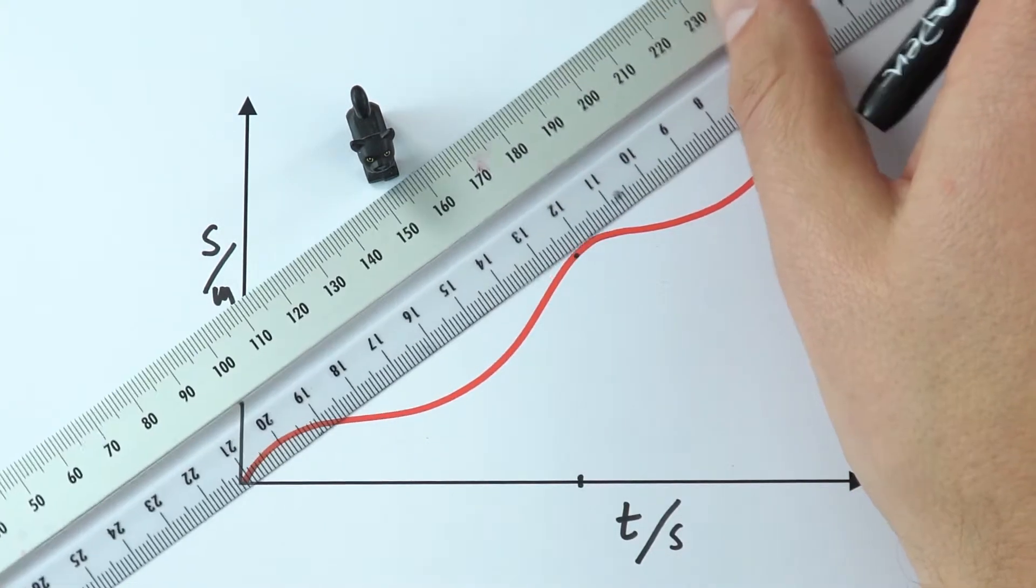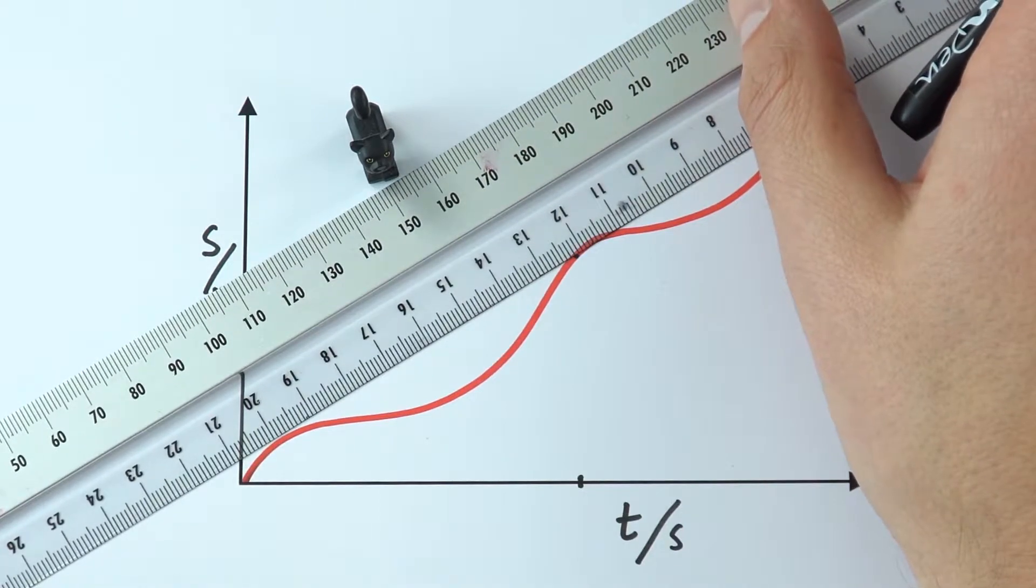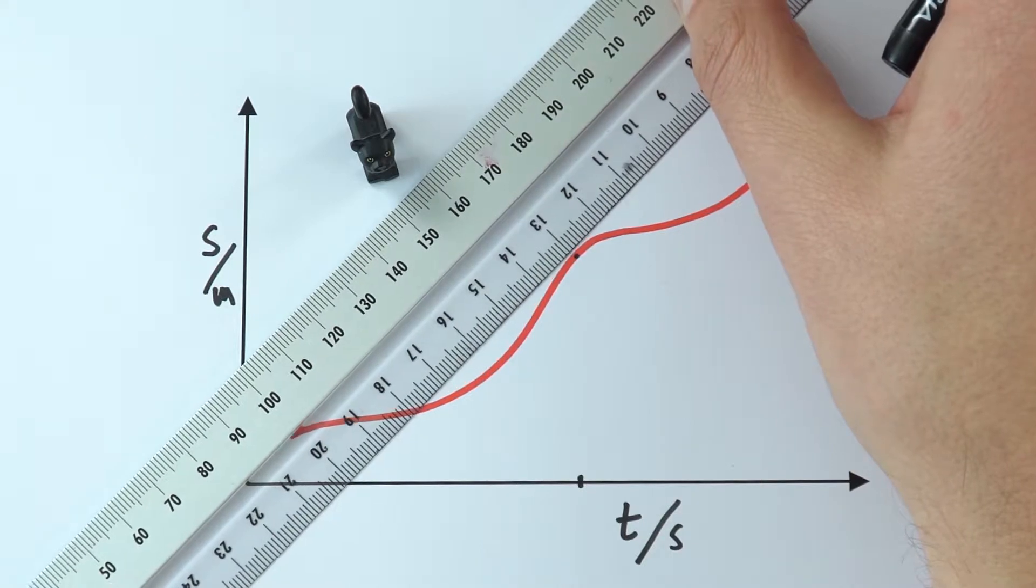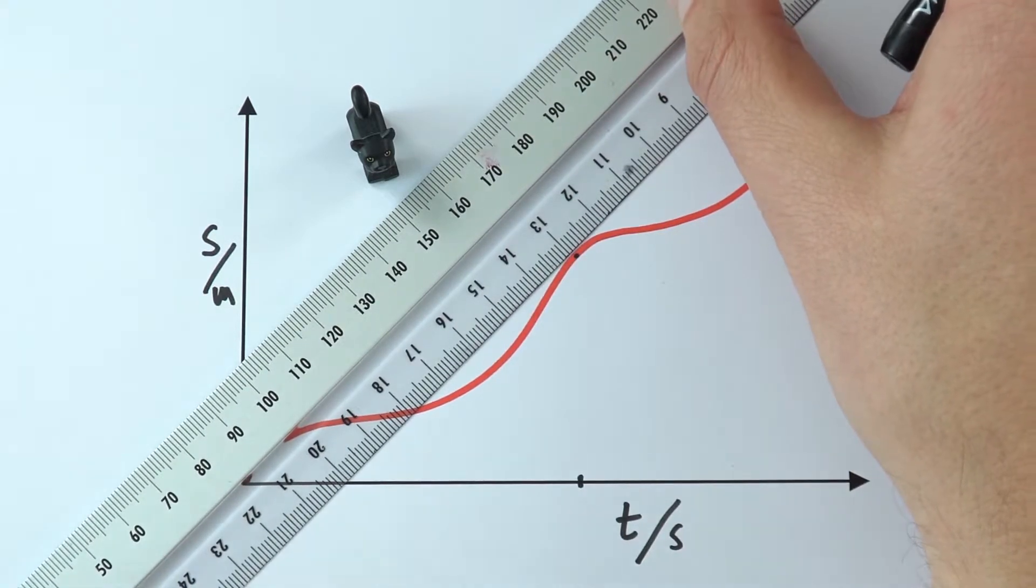Now, this is where it's really down to you to judge it by eye. I'd say that here that's a bit too shallow. That's probably a bit too steep. So somewhere in the middle is going to be about right. So I'm going to say about there.